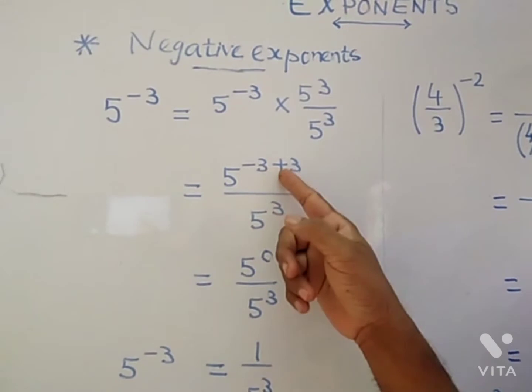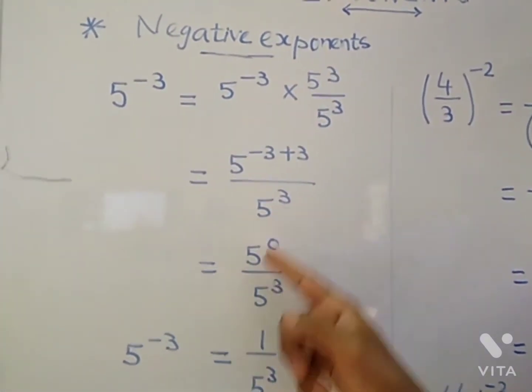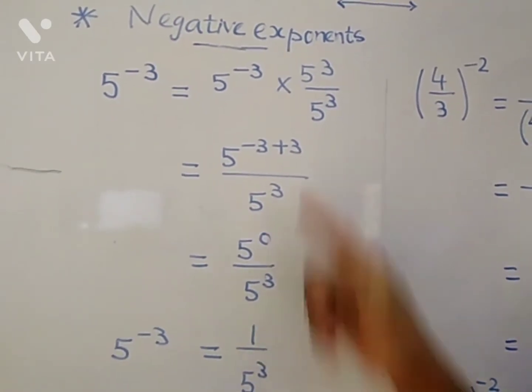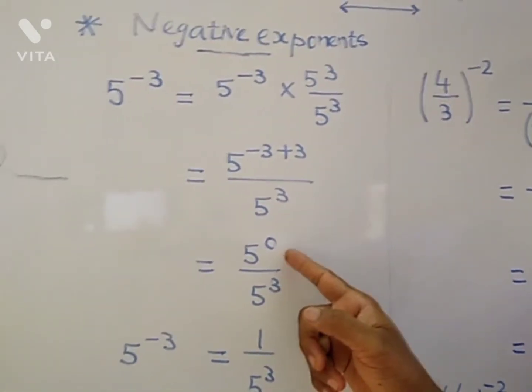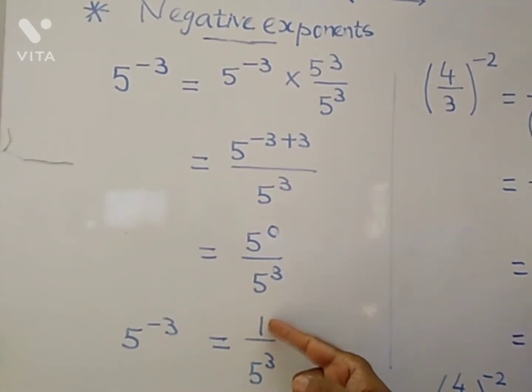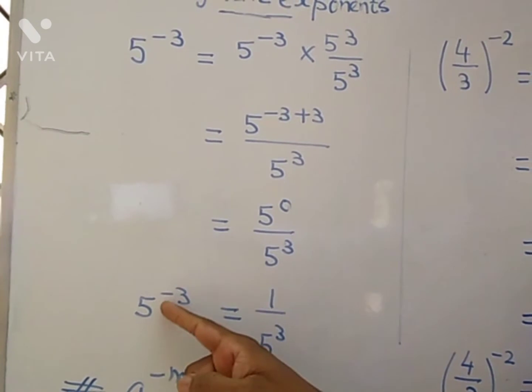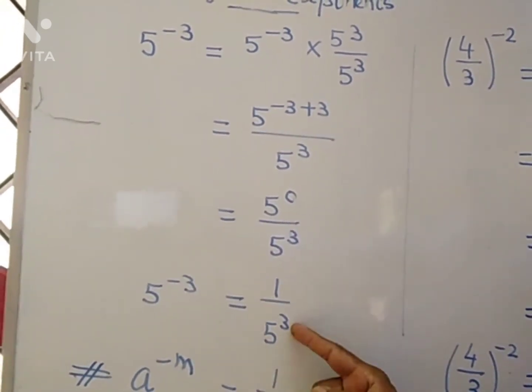Now, minus three plus three becomes zero, and anything power zero is one. This property is given in exponents. So we get one by five power three. Five power minus three equals one by five power three.